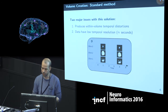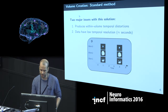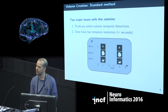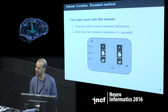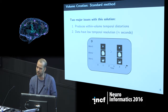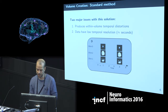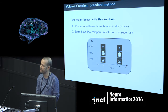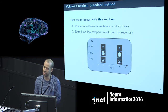There are two major problems with this solution. First, these volumes contain temporal distortions — it is not true that different slices were all acquired at the same time point; you have simply relabeled them, so the data is temporally inaccurate. Second, you lose temporal resolution: you actually sample data at time points zero, two, and three, but in this representation of the data, that temporal resolution is lost.